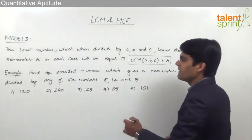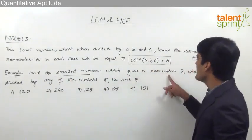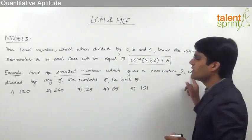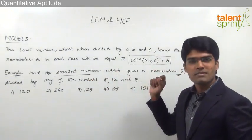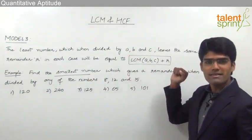So the question says we are supposed to find out the smallest number which always gives the remainder 5 whether you divide by 8 or by 12 or by 15. So as you can see here this question is similar to what we have discussed.